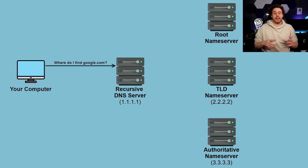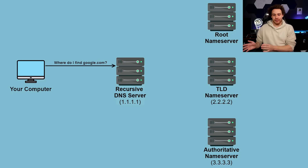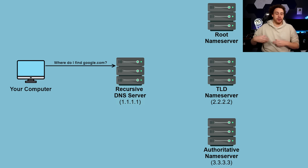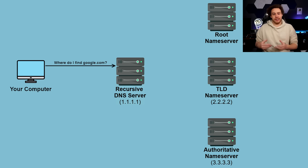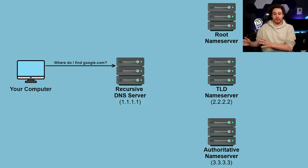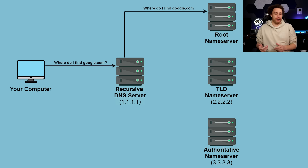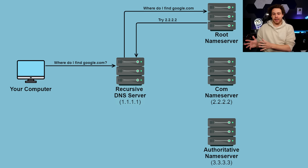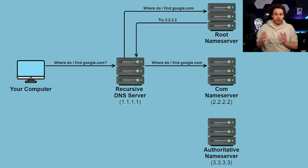The root name servers are the servers that know where all of the TLD servers, or top level domain servers, are. So if you've got a domain like google.com, that's a .com domain, so it's going to use the .com top level domain server. If you had a .org domain it would use the .org server and so on. So my ISP's DNS server is going to ask the root name server 'hey, where can I find google.com?' and the root name server is going to respond with the address of the .com top level domain server.